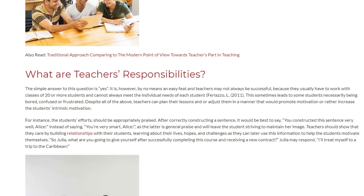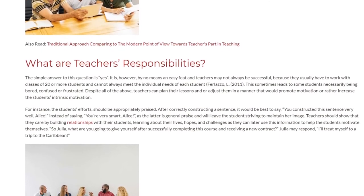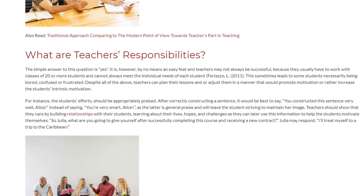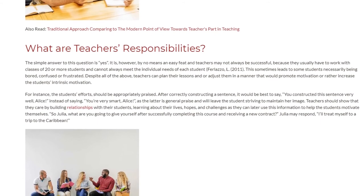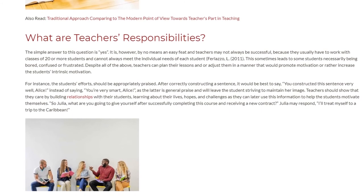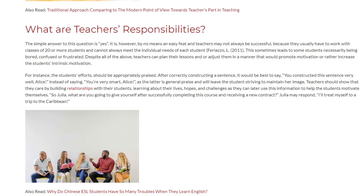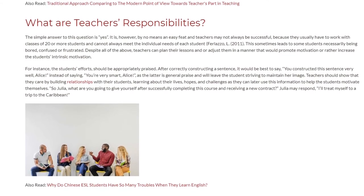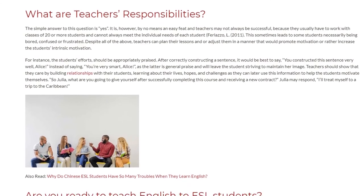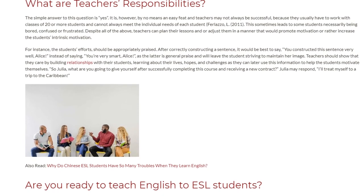For instance, the student's efforts should be appropriately praised. After correctly constructing a sentence, it would be best to say, 'You constructed this sentence very well, Alice,' instead of saying, 'You're very smart, Alice,' as the latter is general praise and will leave the student striving to maintain her image. Teachers should show that they care by building relationships with their students, learning about their lives, hopes, and challenges, as they can later use this information to help the students motivate themselves.